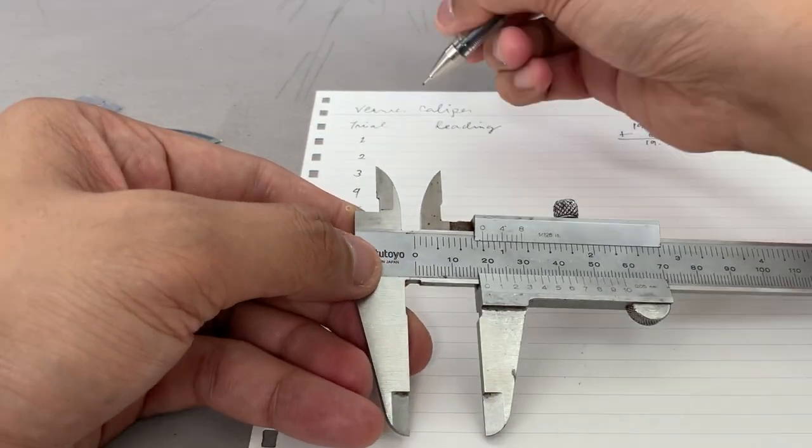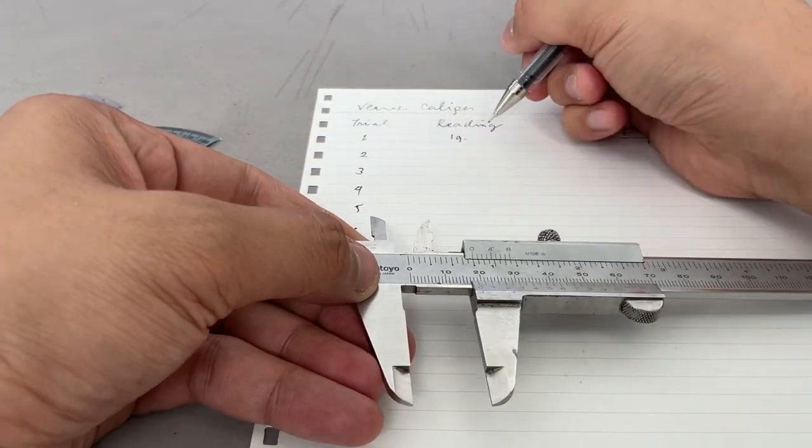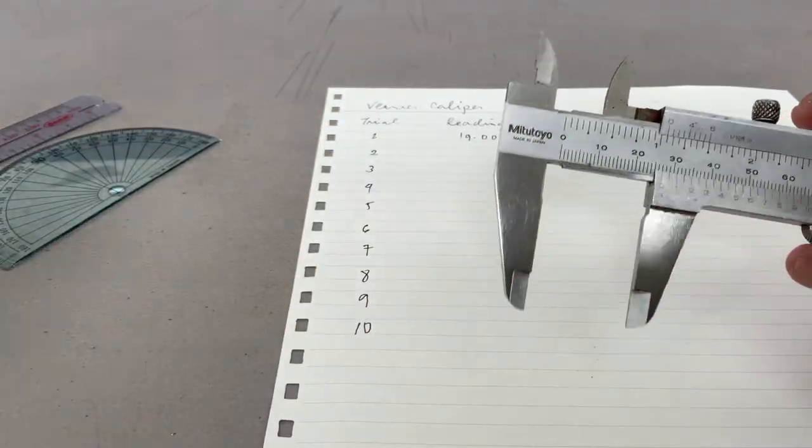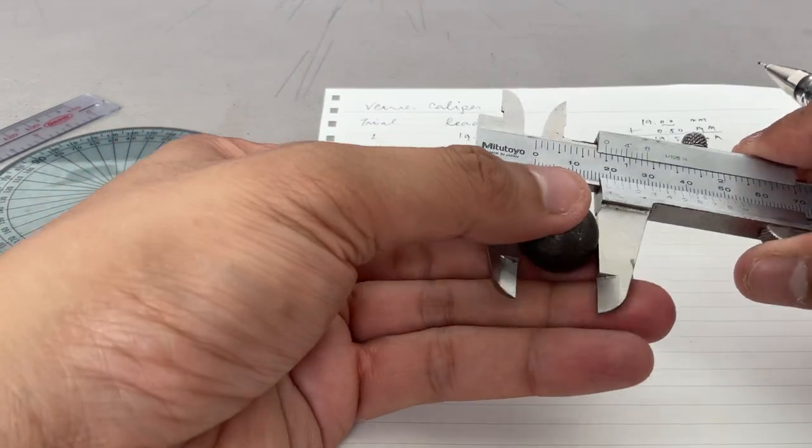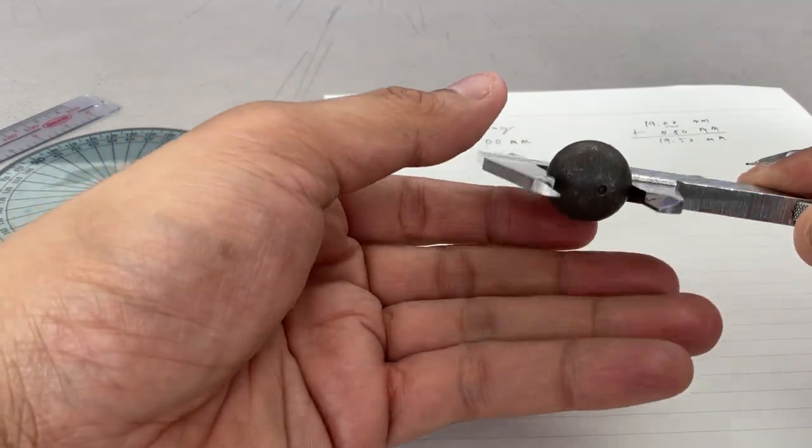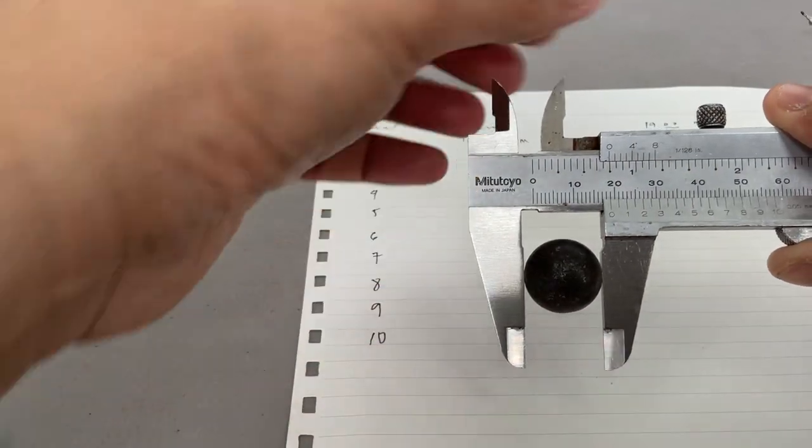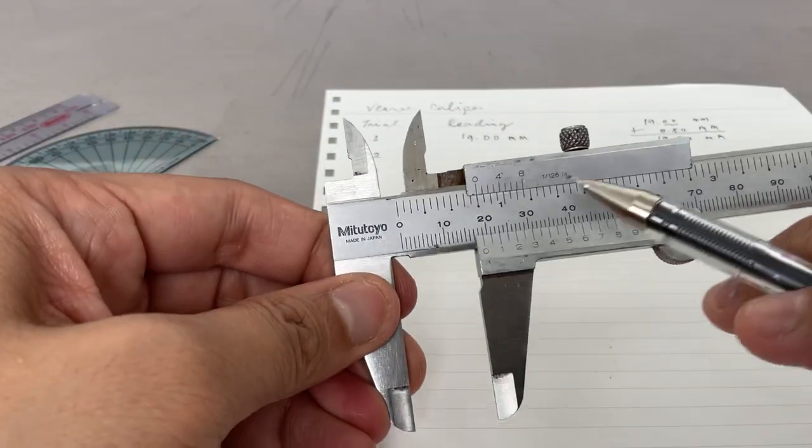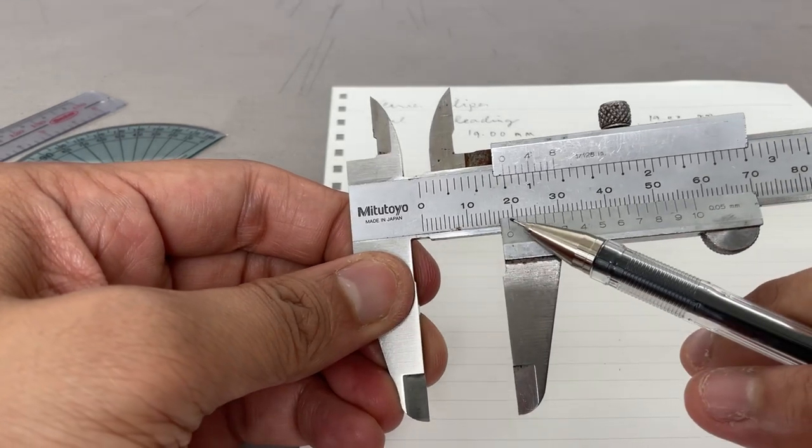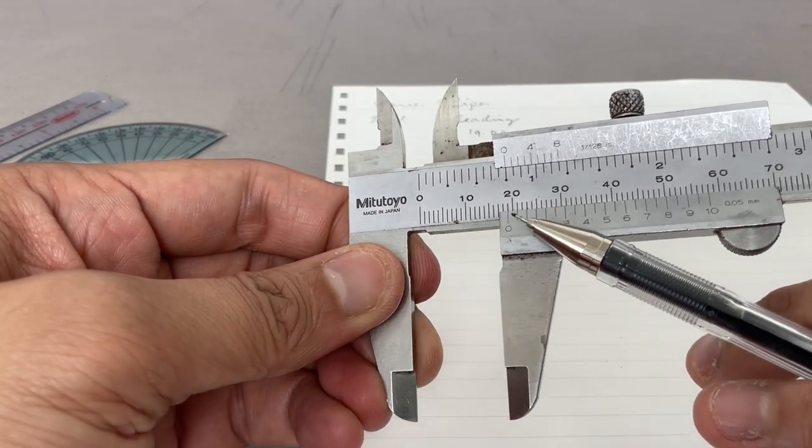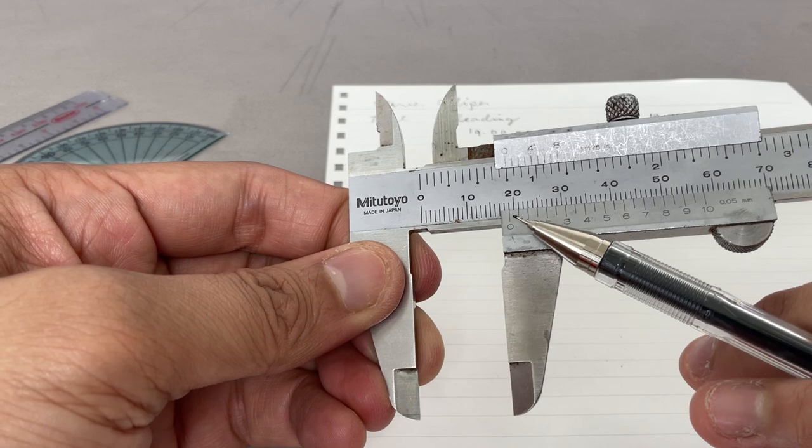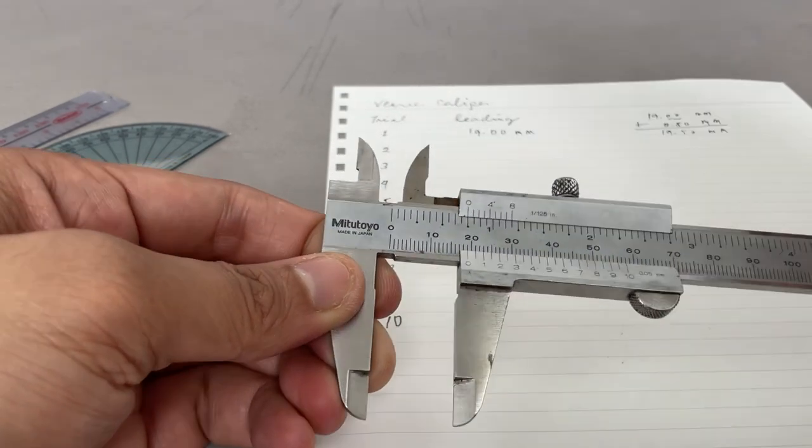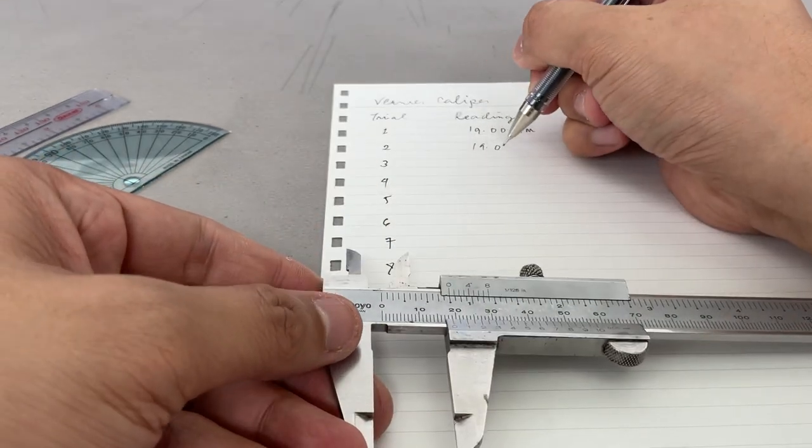For our trial one it's 19.00 millimeter. You can do another trial, trial number two. I will lock it. So what's the reading? It doesn't perfectly align. Well, I think it's also 19. 19.00.